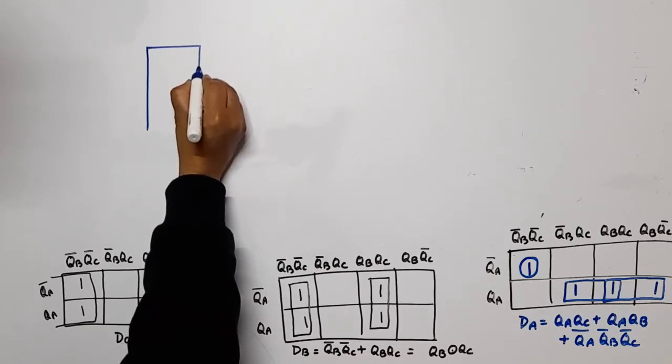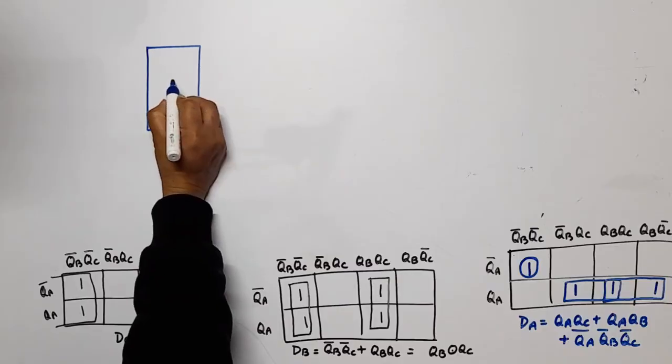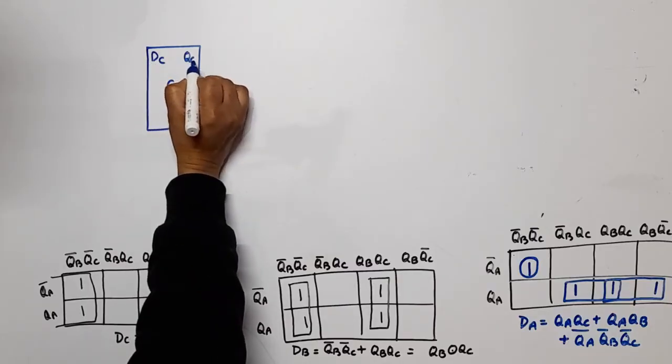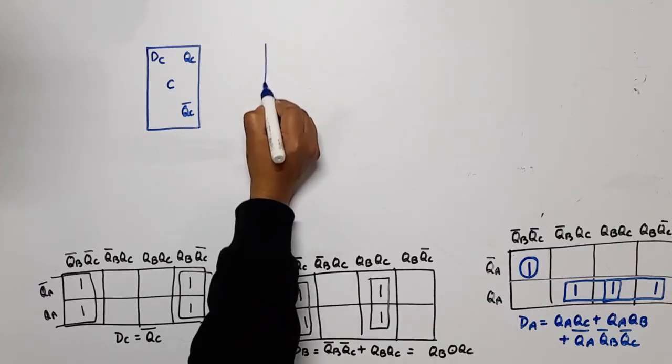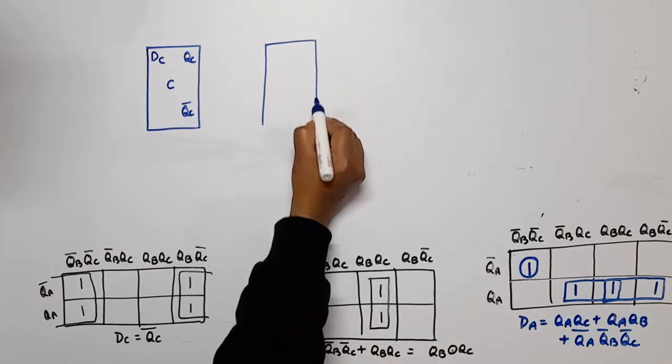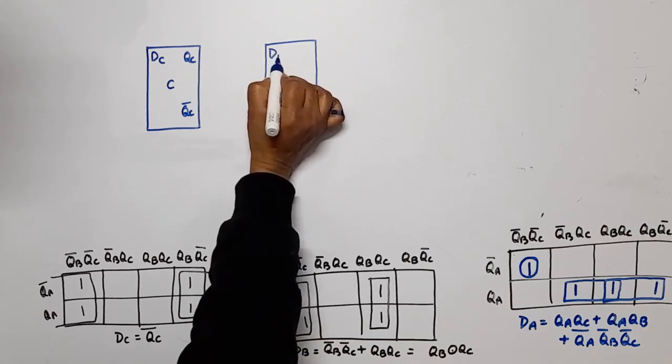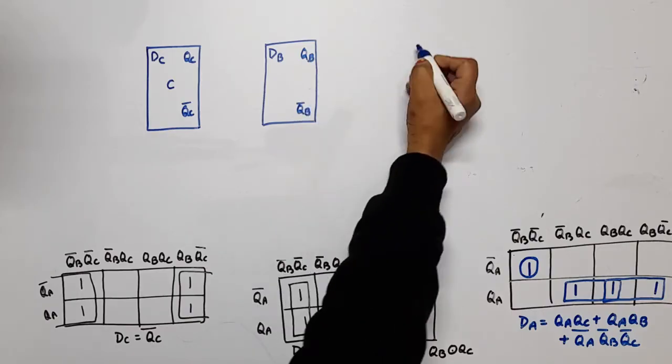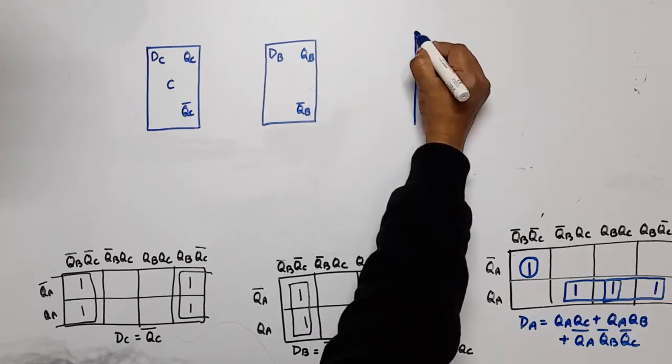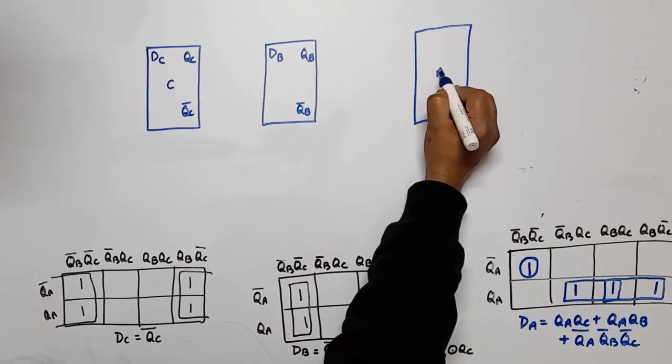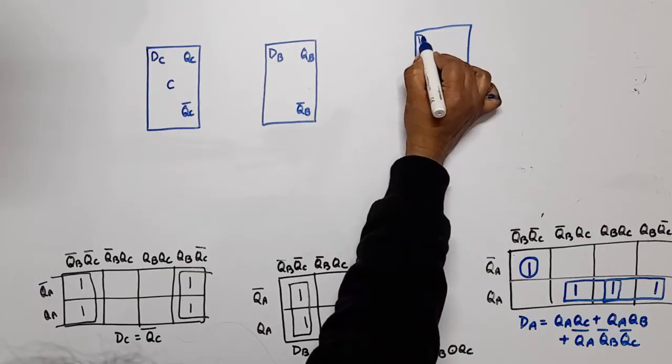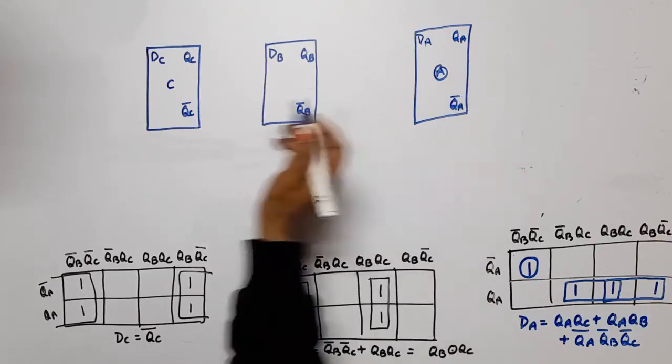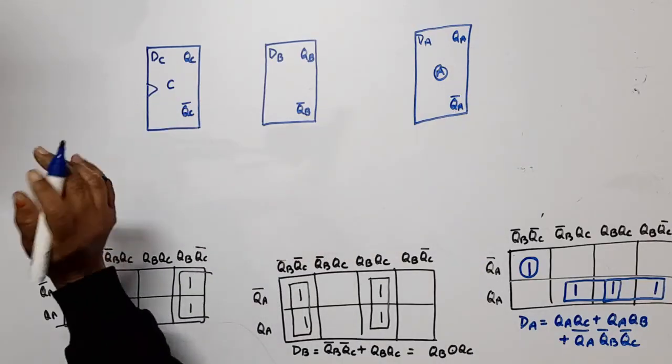First, remember this is LSB, means that it is C. So here what will be dC, QC, and QC bar. Next is B, so here will be dB, QB, and QB bar. Next will be MSB, means this is A flip-flop A, means it will be dA, QA, and QA bar. Now this is a synchronous counter, means the clock will be the same for all.